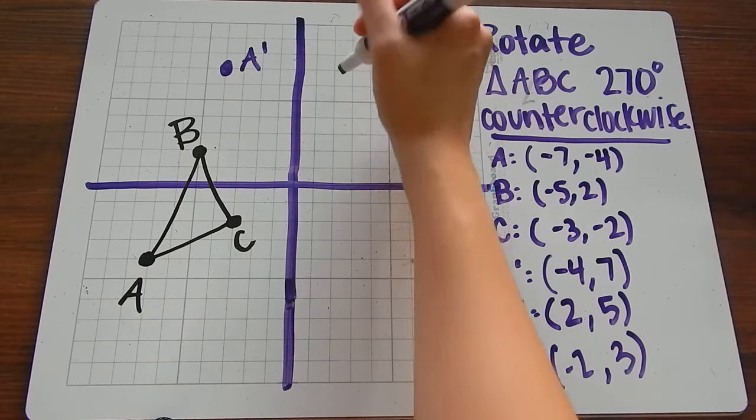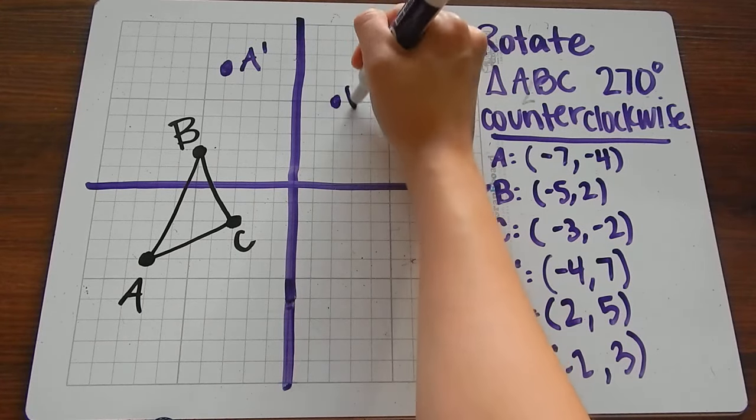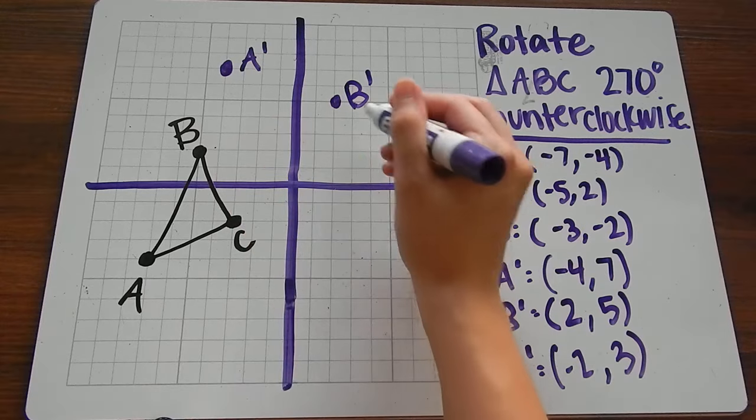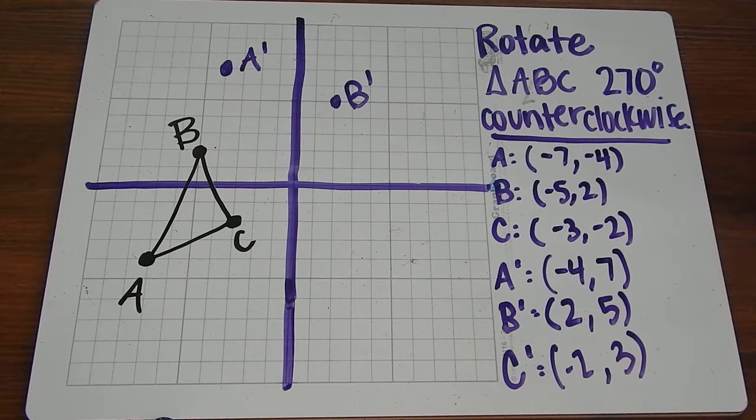B prime is (2, 5). Again, I wanted it to be in this quadrant. That's three quadrants over, so that's good.